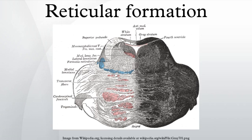Reticular formation nuclei that modulate activity of the cerebral cortex are part of the reticular activating system. Mass lesions in the brainstem cause severe alterations in level of consciousness because of their effects on the reticular formation. Bilateral damage to the reticular formation of the midbrain may lead to coma or death. Lesions in the reticular formation have been found in the brains of people with post-polio syndrome, and some imaging studies have shown abnormal activity in this area in people with chronic fatigue syndrome, indicating a high likelihood that damage to the reticular formation is responsible for the fatigue associated with these syndromes.